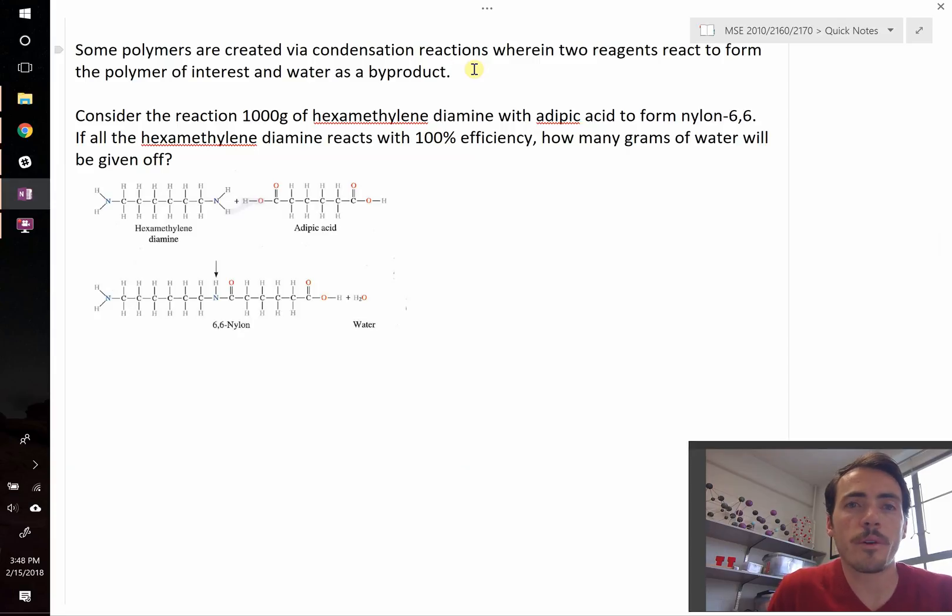Consider the reaction of 1,000 grams of hexamethylene diamine with adipic acid to form nylon-6,6, a pretty important polymer. If all the hexamethylene diamine reacts with 100% efficiency, how many grams of water will be given off?